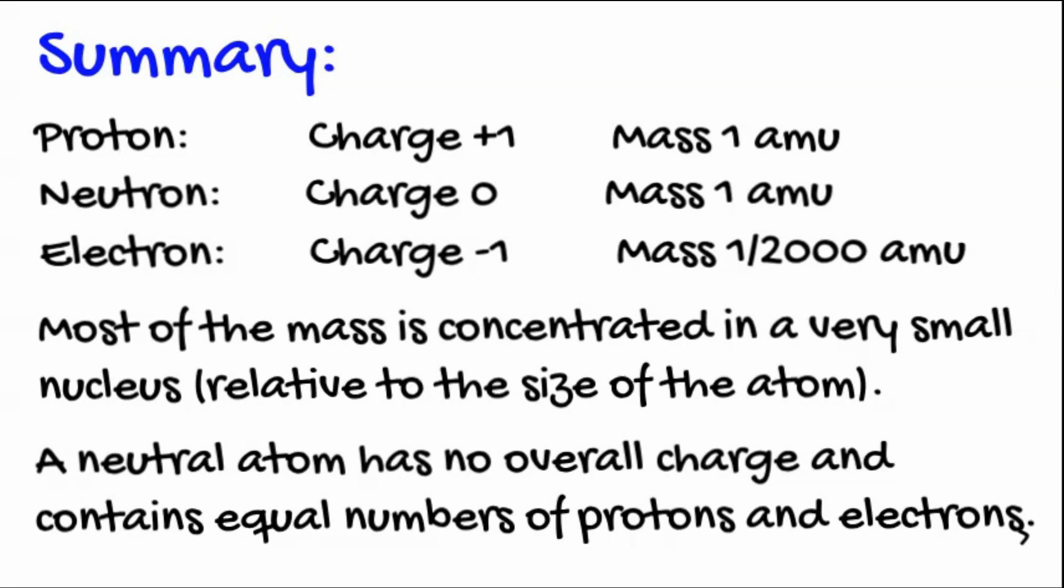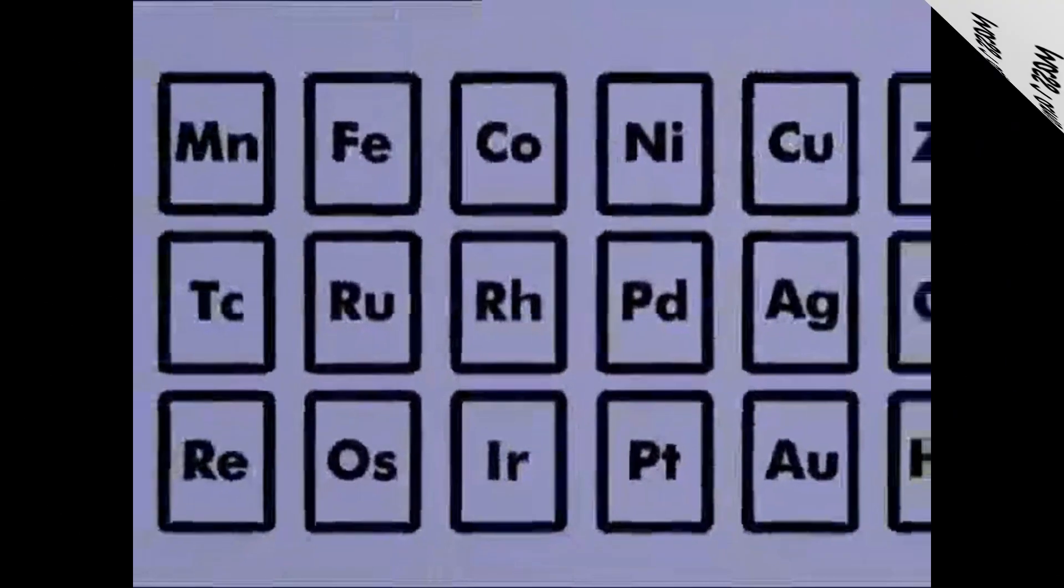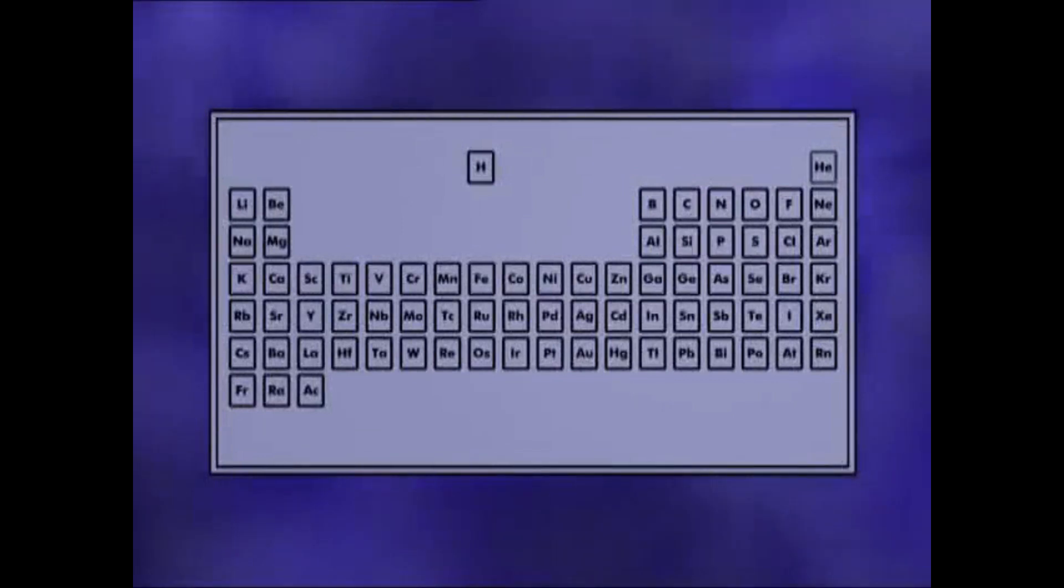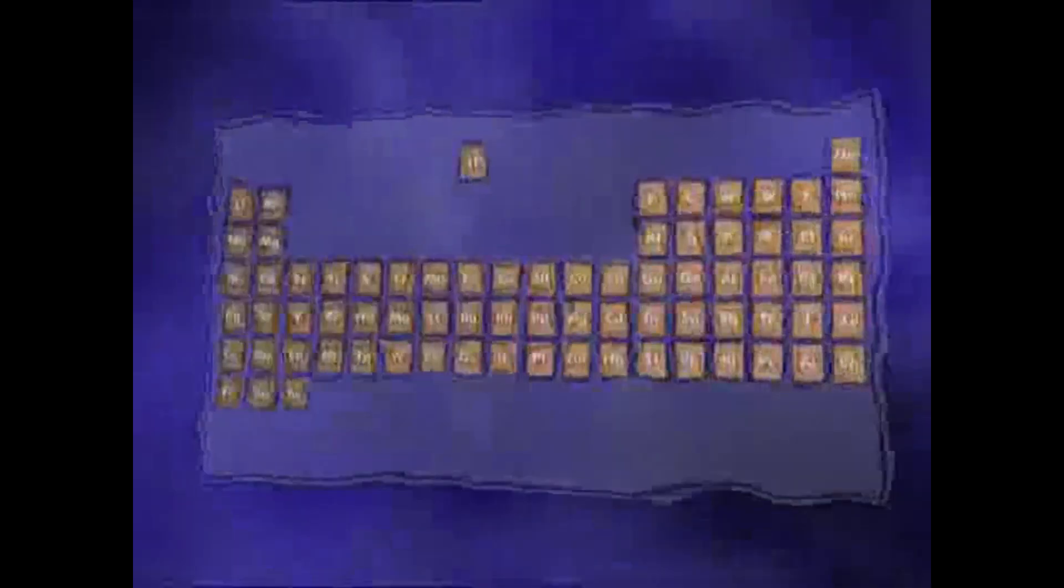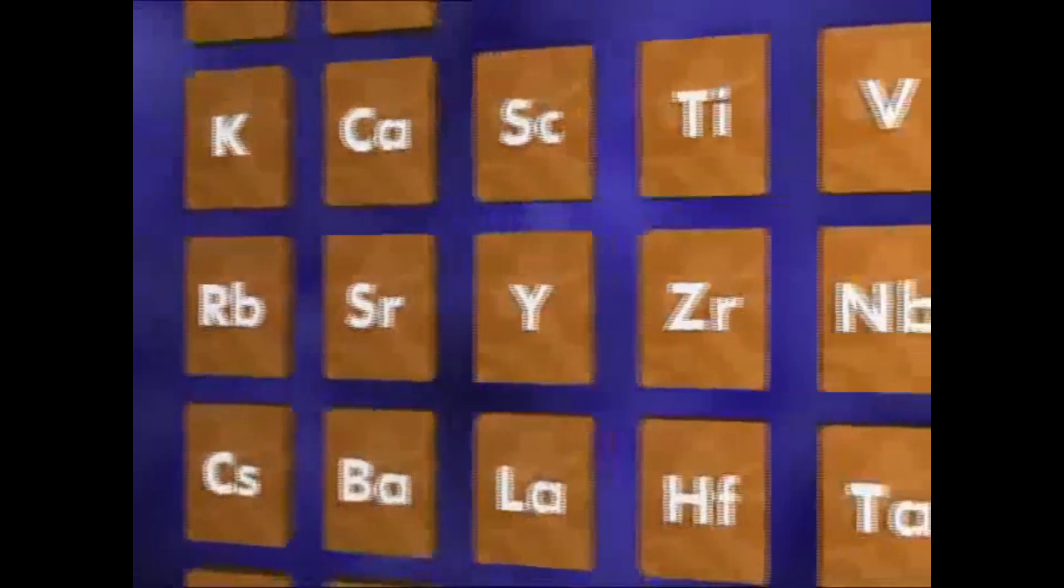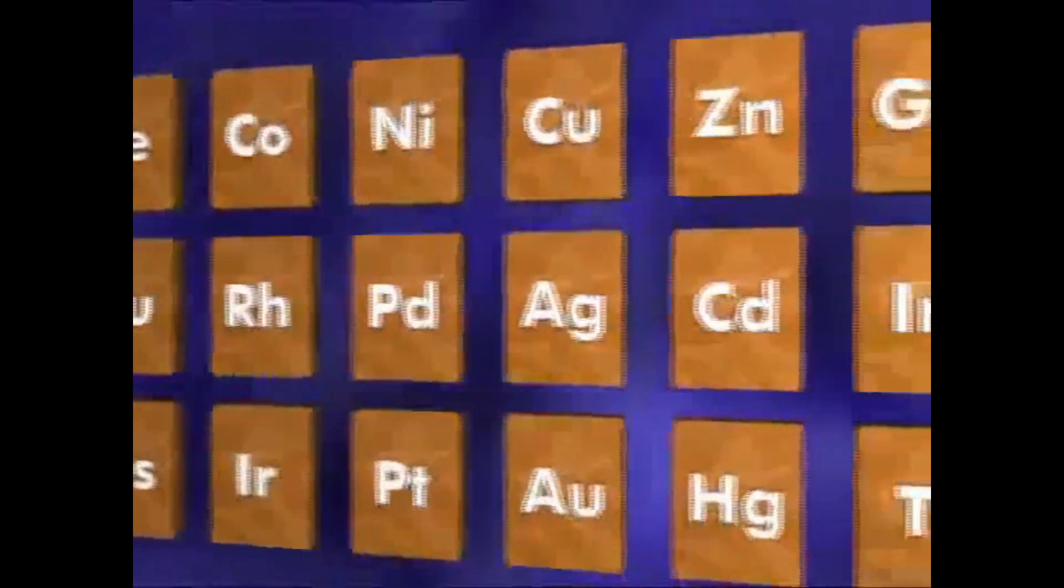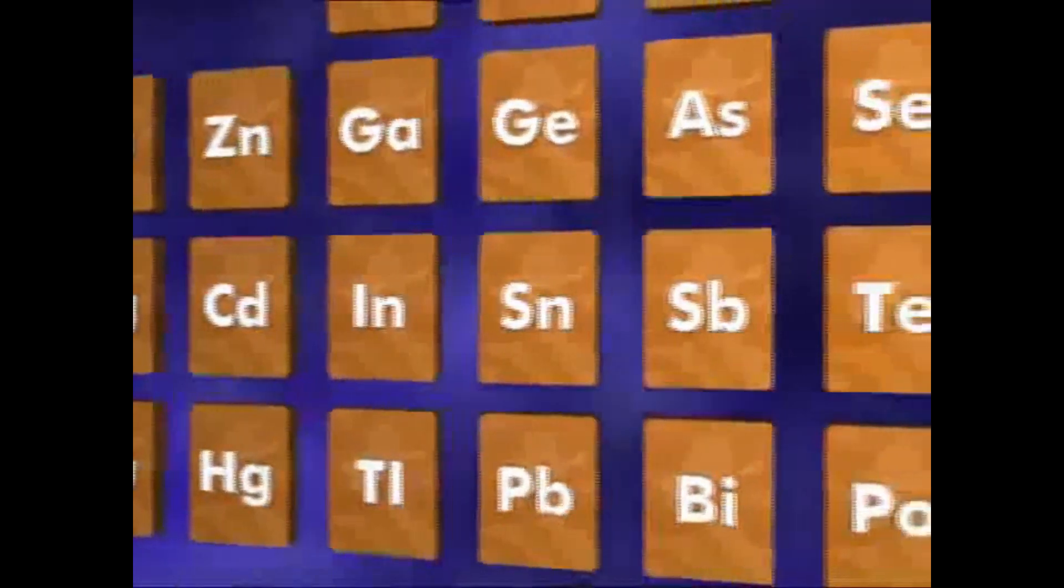The periodic table is the most popular chemical pin-up in the world. In every science lab, you'll find the elements set out in exactly the same order. The layout isn't alphabetical, but it isn't random either. Every element in the periodic table is arranged in order of increasing atomic number.